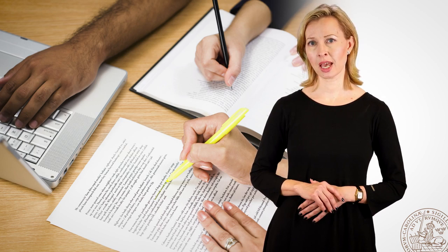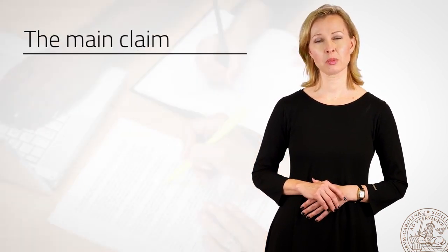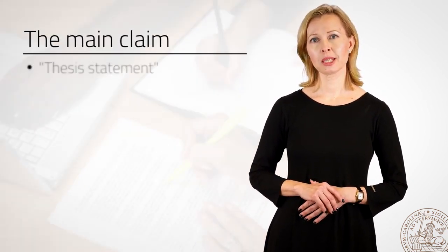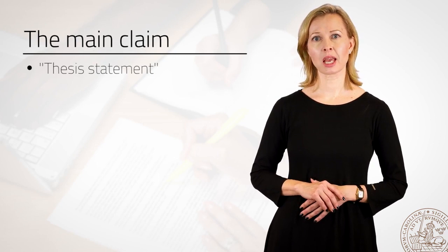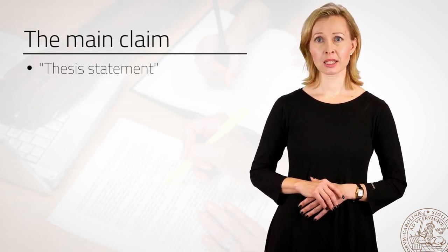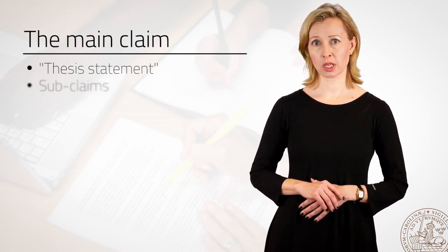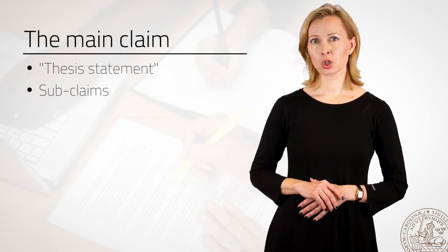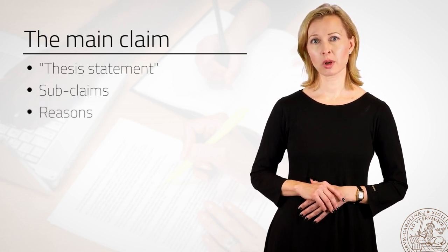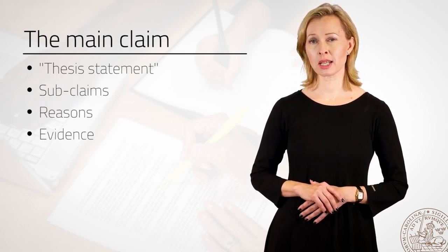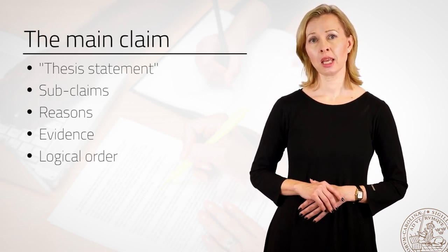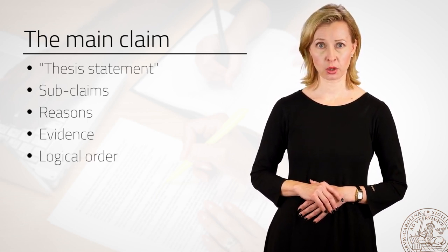Argumentative writing is about persuasion. Creating a convincing argument is about making claims and providing convincing evidence for these claims. At the center of an argumentative essay is one main claim — this is often called the thesis statement. The main claim, or the thesis statement, is then supported by a series of subclaims. Each subclaim is backed up with reasons and evidence and presented in an order that makes logical sense in relation to the overall argument.